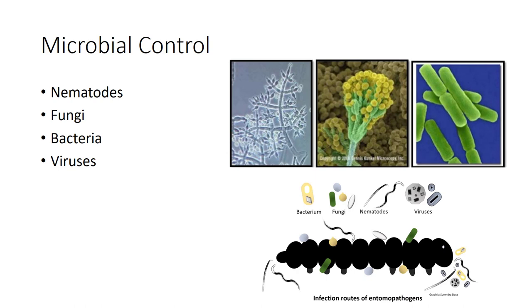In addition to virulence for the target species, other advantages of microbial controls include their compatibility with other control methods, safety of use, ability to stop insect feeding quickly, long shelf life, and ability to self-replicate. Due to host specificity, separate microbial controls may be needed for multiple pests. Also, they are more expensive and insects can become resistant to microbial pathogens.